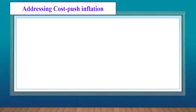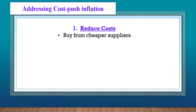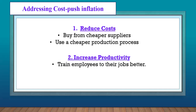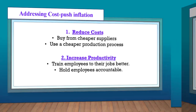How can cost-push inflation be addressed? Companies can try to reduce costs by, for example, buying from cheaper suppliers or using cheaper production processes — maybe using machines instead of people. Increased productivity can also help. Companies can train employees to do their jobs better, or hold employees accountable so that they perform much better.